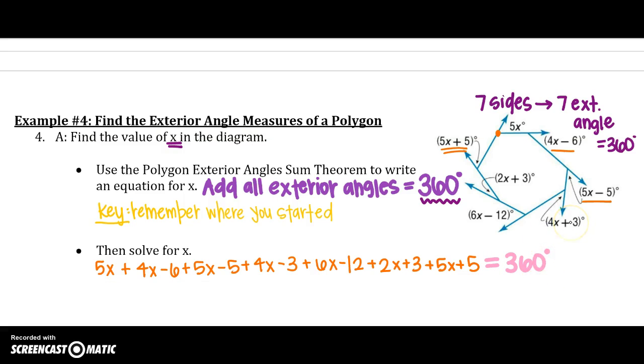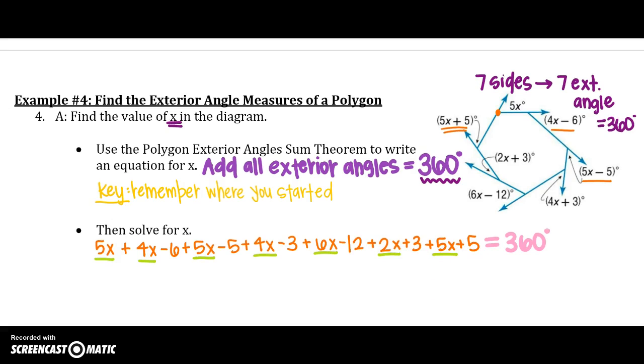Now, it sounds kind of crazy, but that is what the theorem says. So, remember everything is on one side, so we need to combine like terms. So 5x plus 4x plus 5x plus 4x plus 6x plus 2x plus 5x. So, adding all those together, we are going to have 31x, so remember do not change their signs. Next, negative 6 minus 5 minus 3 minus 12 plus 3 plus 5. In that calculator, you would come up with negative 12 to make sure you are not changing its sign. And that is always going to add up to 360 degrees. Exterior angles equal 360. We knew that.